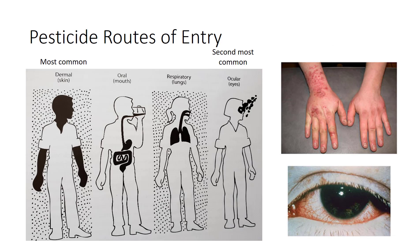Pesticides can enter the body through four major routes — dermal, ocular through the eyes, oral through ingestion through the mouth, and inhalation. Dermal exposure is the most frequent type of pesticide exposure by those using pesticides. Certain pesticides injure the skin while others may pass through the skin and affect internal organs. Absorption into the body starts as soon as the pesticide touches the skin and continues as long as there is contact. Wear the proper PPE and avoid contact with treated surfaces.